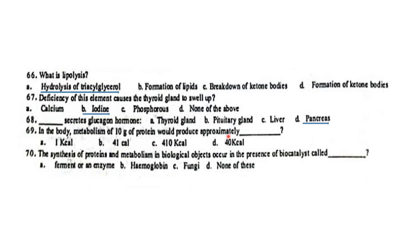The metabolism of 10 grams of protein would produce approximately how many calories? Since 1 gram of protein produces 4 kilocalories, 10 grams produces 40 kilocalories. Option number D is correct: 40 kilocalories are produced.